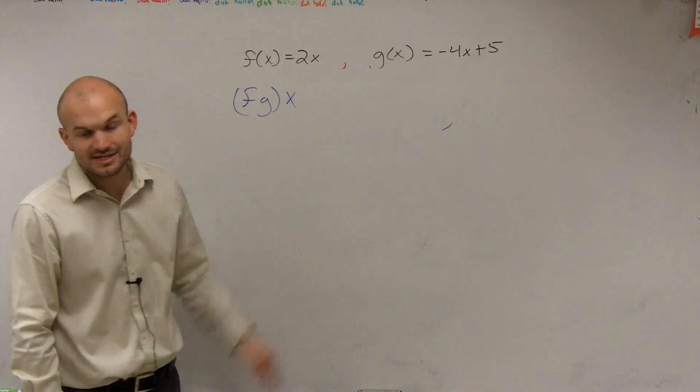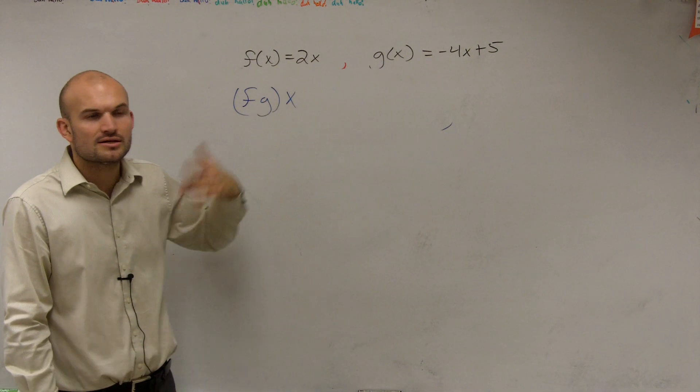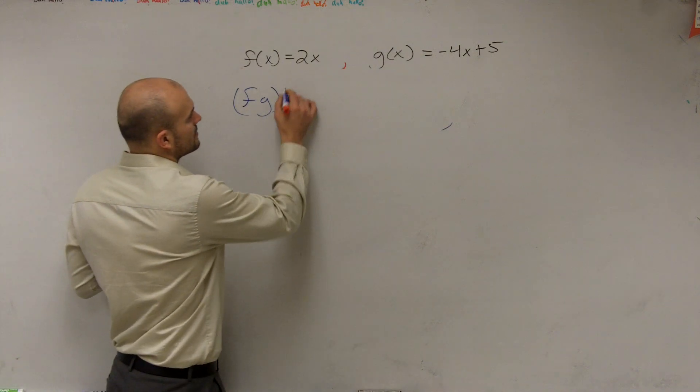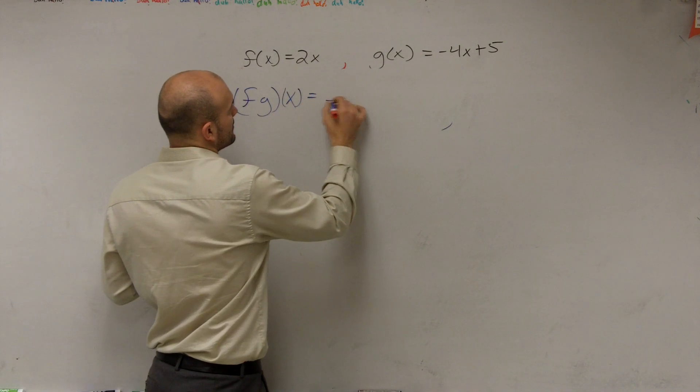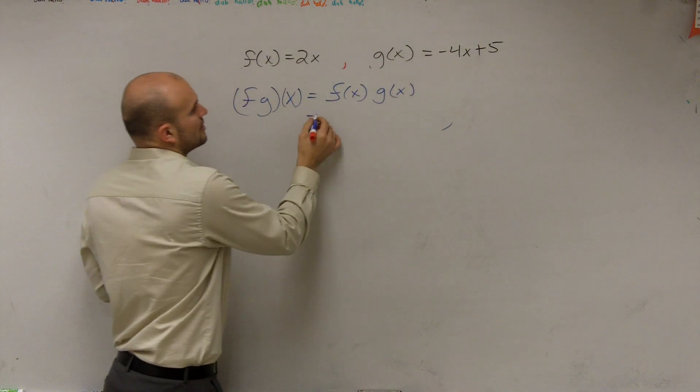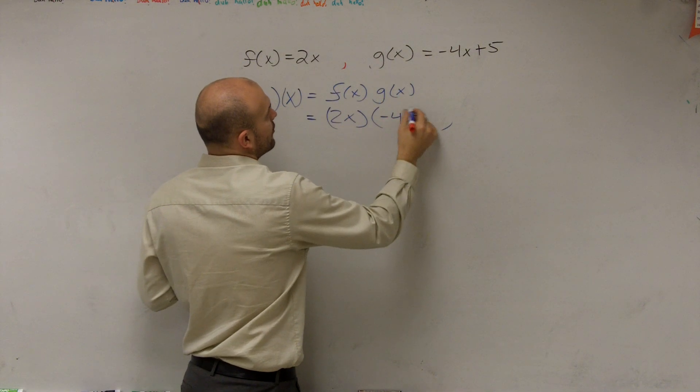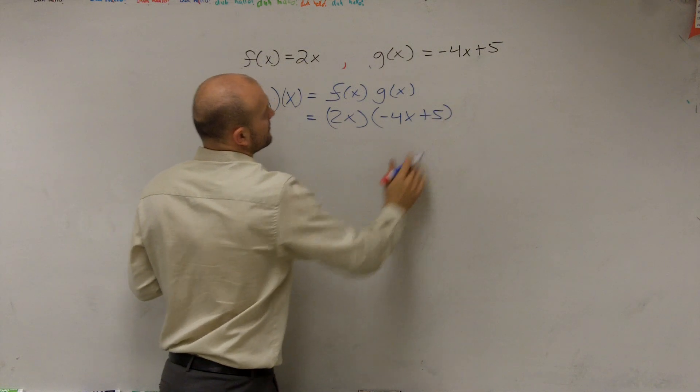So what we have in this case is we have f times g of x. There's no operation symbol between the f and the g, so that tells us to multiply. So what this tells us is f of x times g of x. So that means 2x times negative 4x plus 5, right?